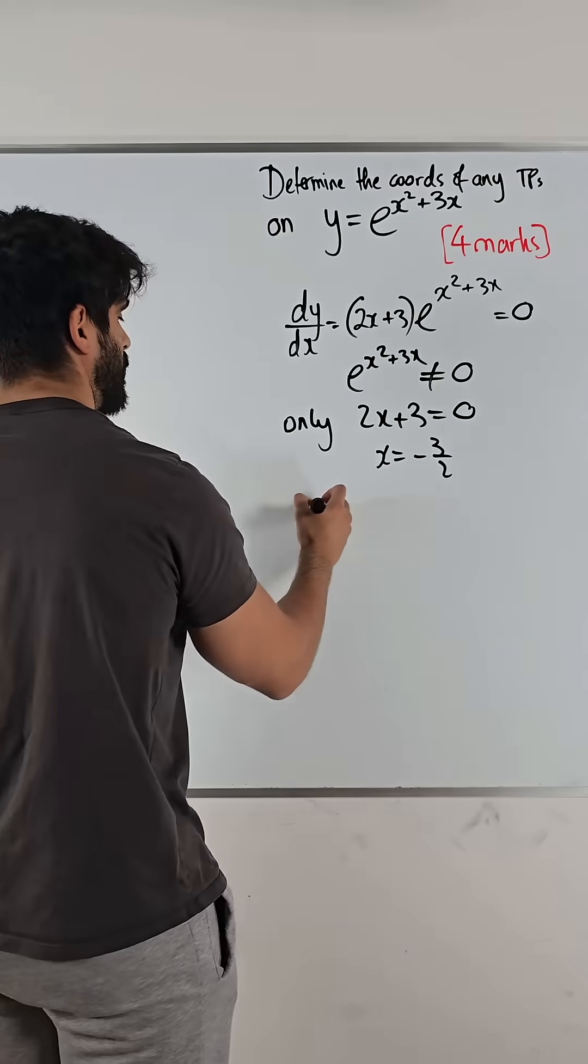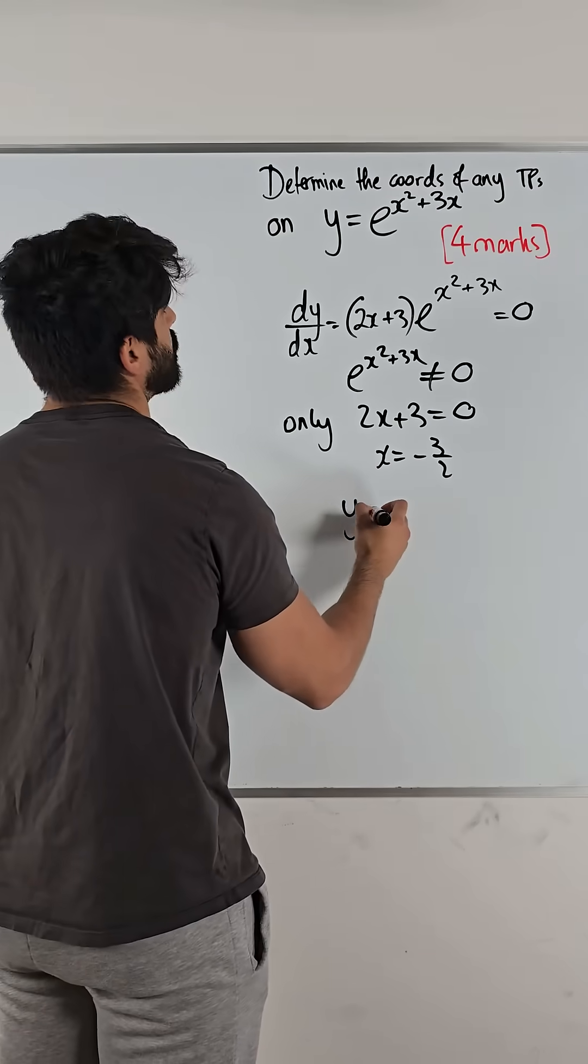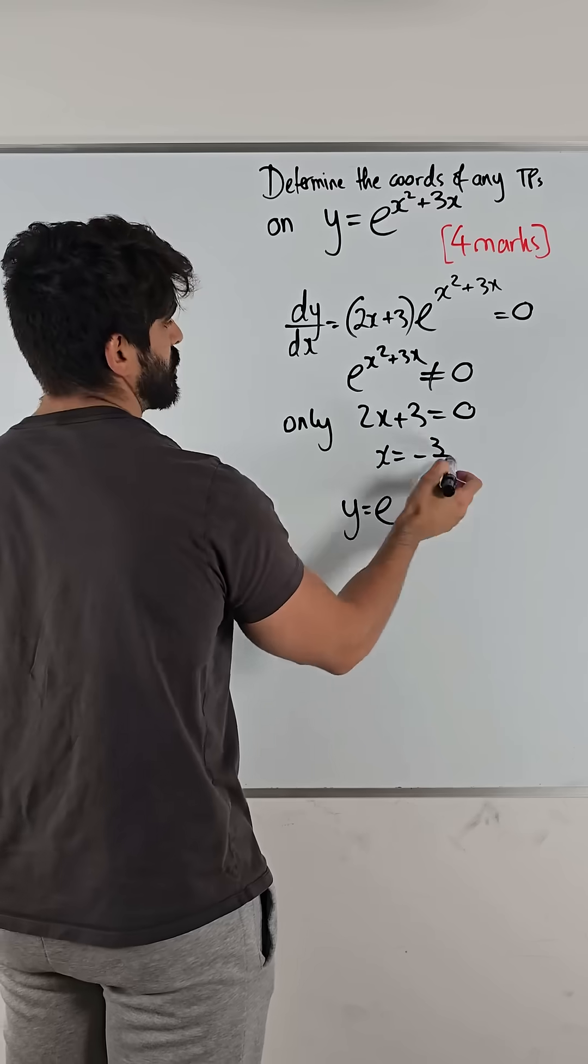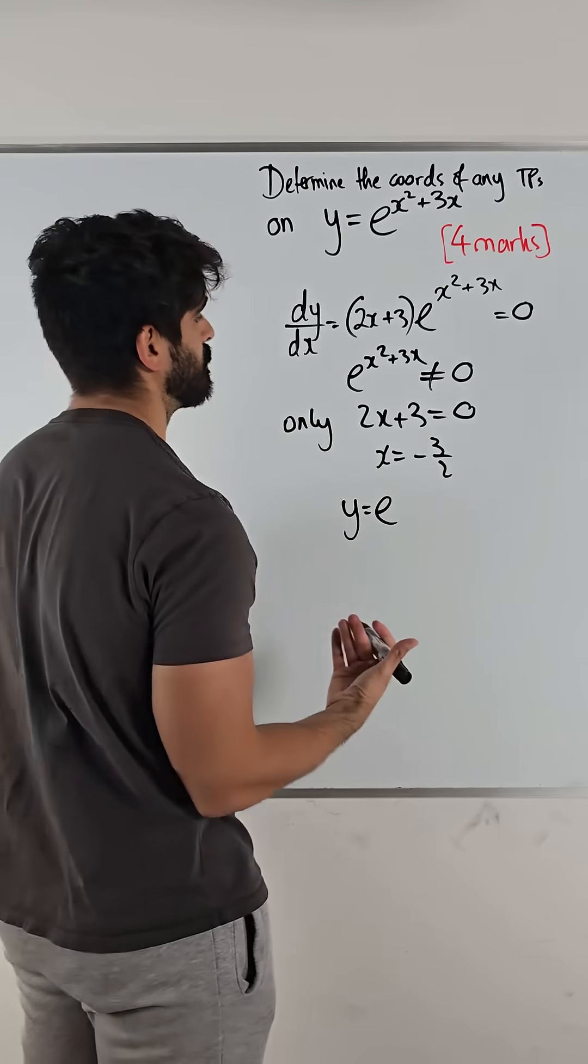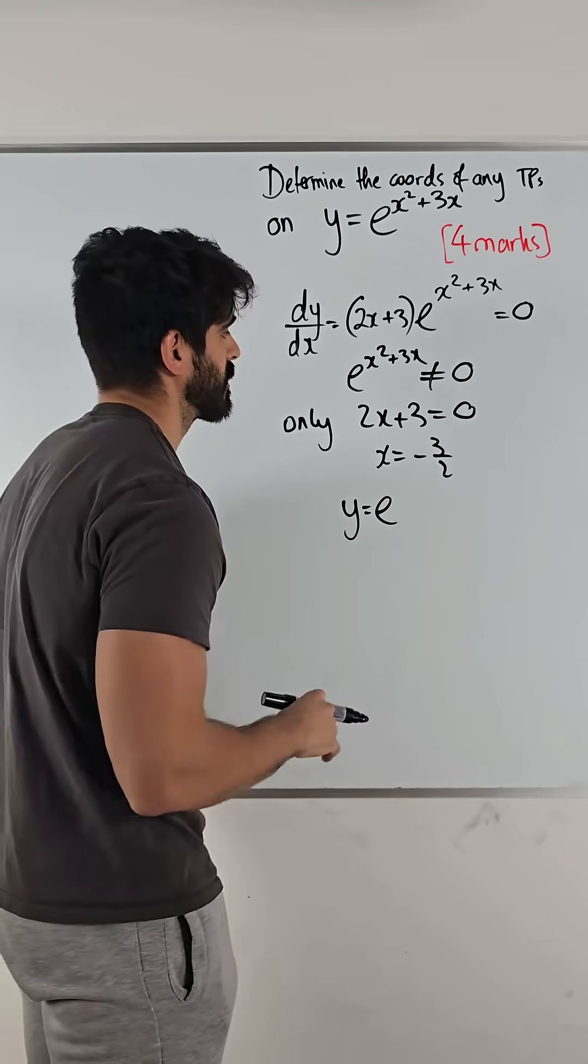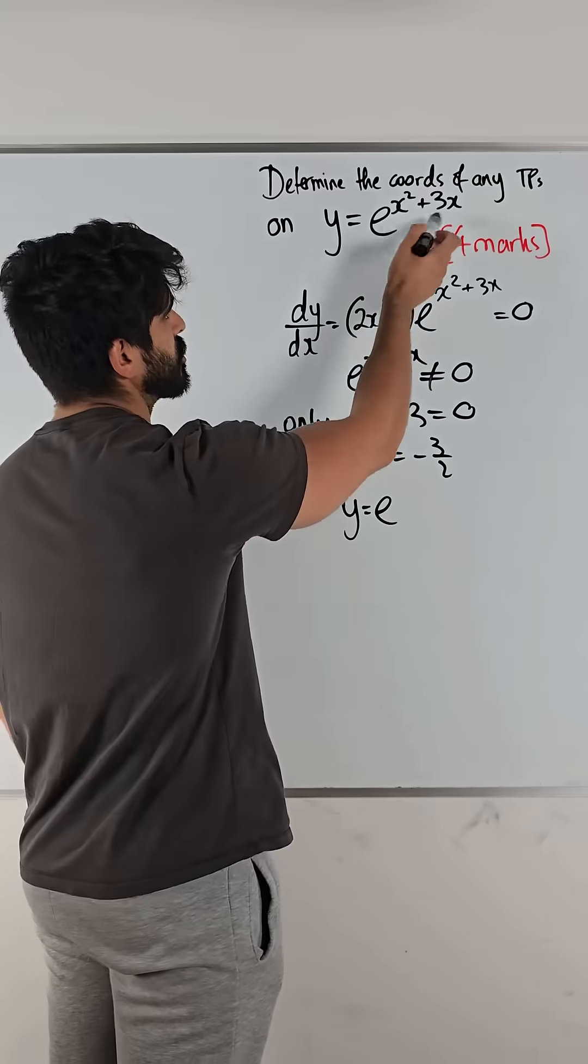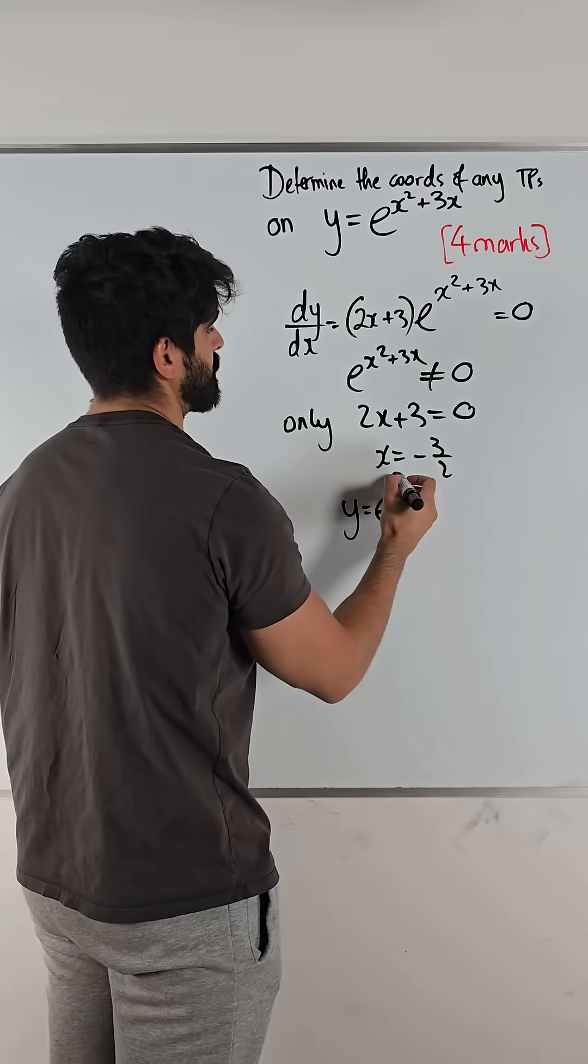But then we wanted the coordinates. So, y would be e when you square this. If you type this all in the calculator, it won't give you an exact value, so you're going to have to compute it yourself, which is a bit stressful because I'm going to have to do it. Actually, you could just do the power separately, but let's test my skills.